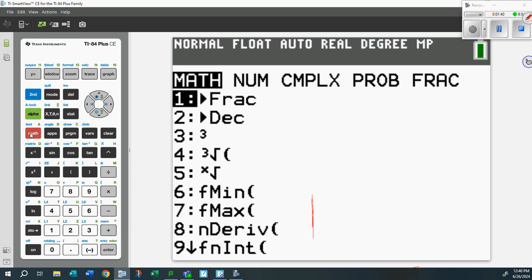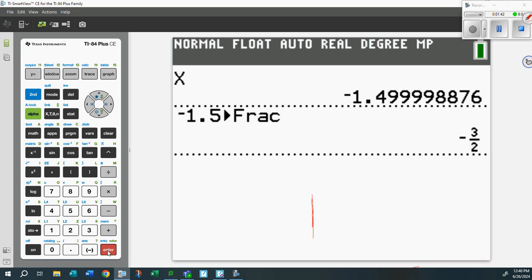Convert that to a fraction: hit MATH, hit ENTER, and boom - now you've got -3/2. There's your actual x-value for the vertex in nice fractional form.